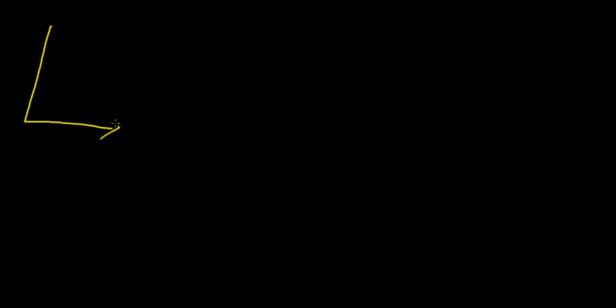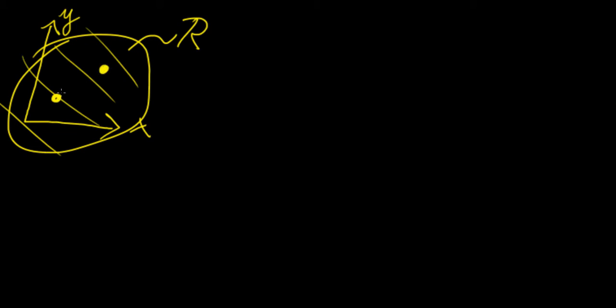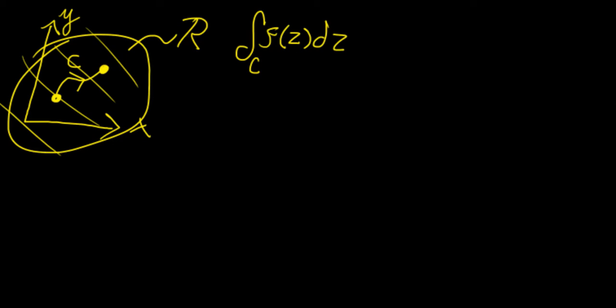Now that we have introduced what complex functions are, or essentially just functions of a complex variable, we can start talking about what we would do if we wanted to integrate a complex function. To begin the definition, we're going to define the imaginary plane as the xy plane, where x is the real part and y is the imaginary part. We define some region within that plane called r, and the integral of a complex function between any two points along some curve is defined as a line integral of f(z) dz.